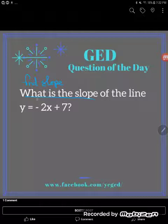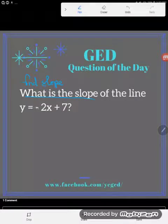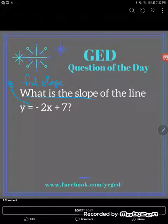But notice, they just say, what is the slope of the line y equals negative 2x plus 7. Notice the equal sign here? What is this thing they've given me? This is an equation.